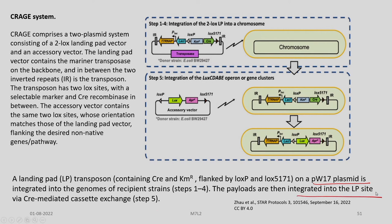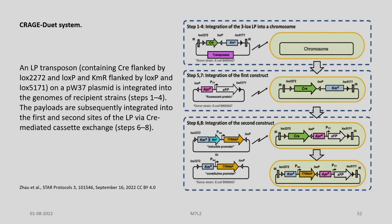The accessory vector contains the same two lox sites whose orientation matches those of the landing pad, flanking the desired non-native genes and pathways. The landing pad transposon containing CRE recombinase and the selectable marker is flanked by LOXP and LOX5171 on a PW17 plasmid, and this is integrated into the genomes of the recipient strains. The payloads are then integrated into the LP site by a CRE-mediated cassette exchange. In the CREAGE DUET system, an LP transposon containing CRE flanked by lox sites and the selectable marker is on a PW37 plasmid, integrated into the genomes of recipient strains in steps 1 to 4, and payloads are subsequently integrated via CRE recombinase-mediated cassette exchange in steps 6 to 8.